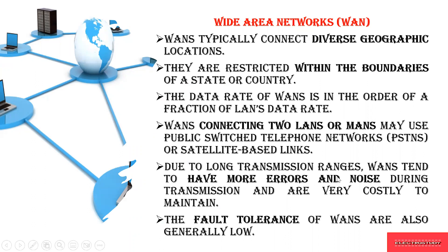Due to long transmission ranges, WAN will have more errors and noise. Obviously, when there is a large area of transmission, there will be lots of errors because of noise and external disturbances. So you have more errors when using a Wide Area Network. The fault tolerance of WAN is very low — when compared to LAN and MAN, fault tolerance is low in WAN because there are more errors and noise.